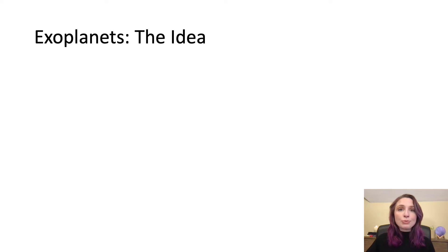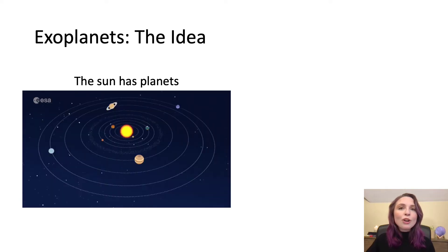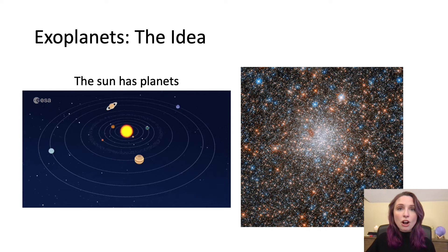Back before exoplanets were discovered, some astronomers thought that they might exist because they knew that the Sun is a star and that the Sun has planets orbiting around it. Now these astronomers also knew that there are hundreds of billions of stars in our galaxy alone. And they thought that it was a pretty good bet that some of these stars might also have planets orbiting around them.